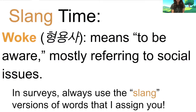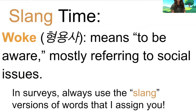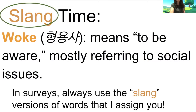The slang version is what I'm looking for. Slang means a hip or new way to say something. The first woke is a verb — 동사. The slang woke is an adjective — 형용사, and it describes a person or a feeling. In surveys, always use the slang version. If I present you with two options, always use the slang one. This was the example: I'm not very woke about global warming, meaning I don't know very much about global warming.